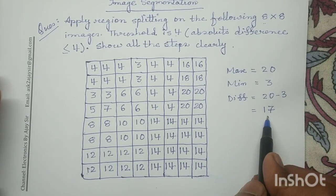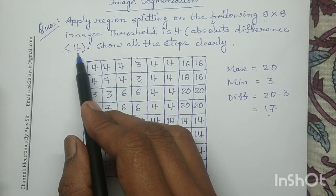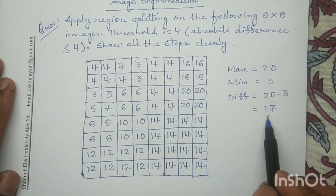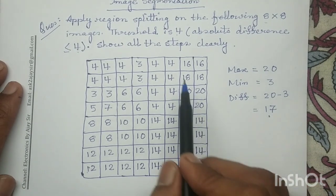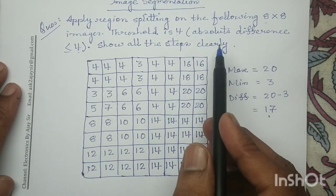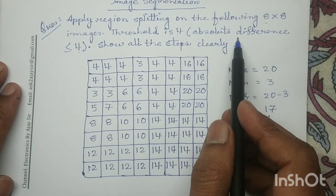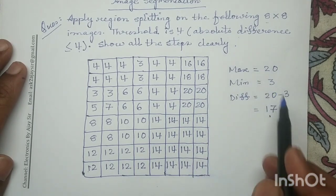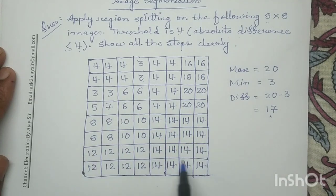Now this number 17 we have to compare with the threshold value 4. Since the threshold value is 4, the difference should be less than or equal to 4. The acceptable values of the difference are 0, 1, 2, 3, or 4. Since 17 is greater than 4, we have to split this entire image into 4 different quadrants.